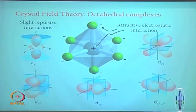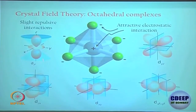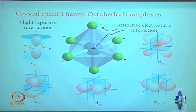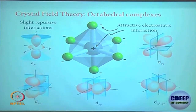Looking quickly at the orbitals again: d_z² and d_x²-y² are shown clearly, along with the other three orbitals. By seeing where the ligands are relative to each orbital, you can understand the stabilization or destabilization of each orbital in the octahedral field.